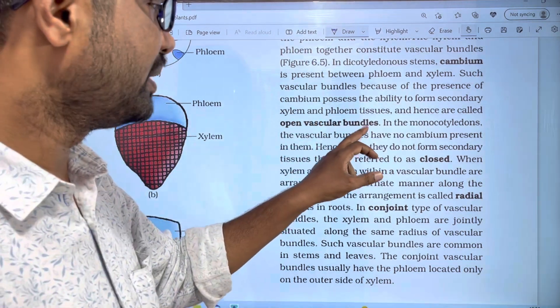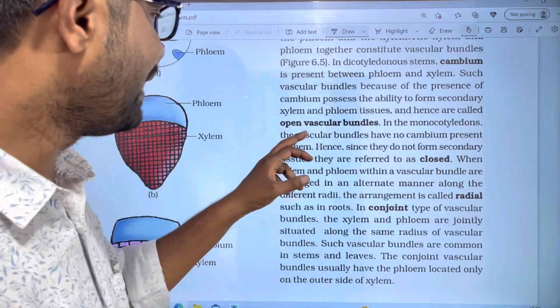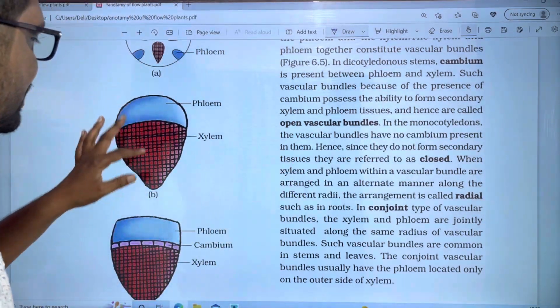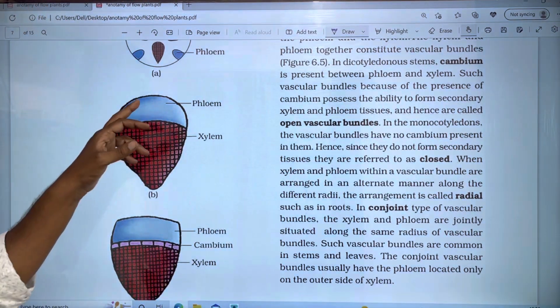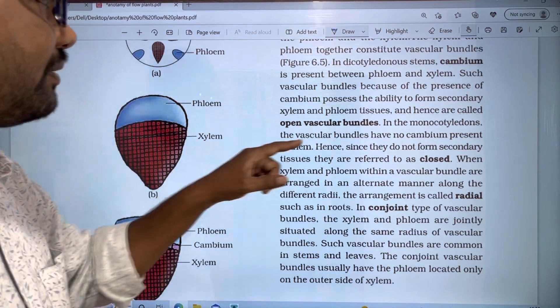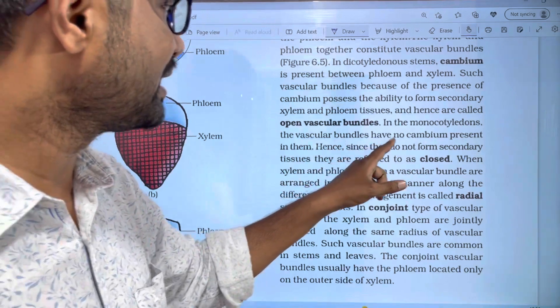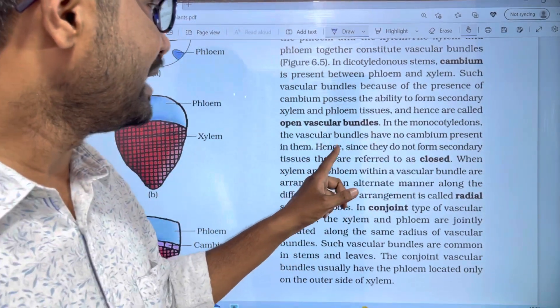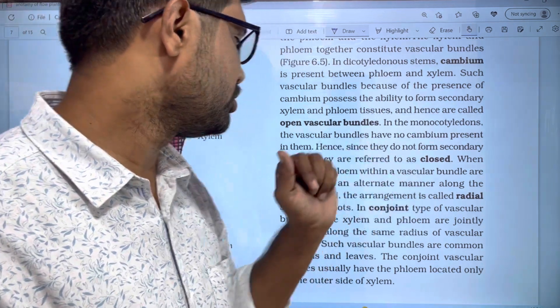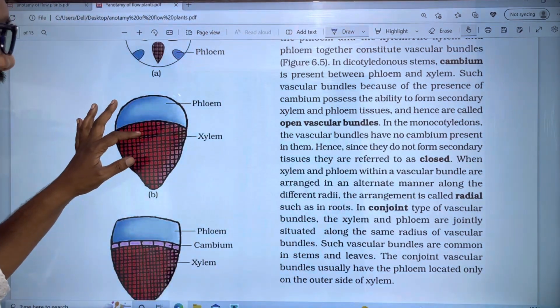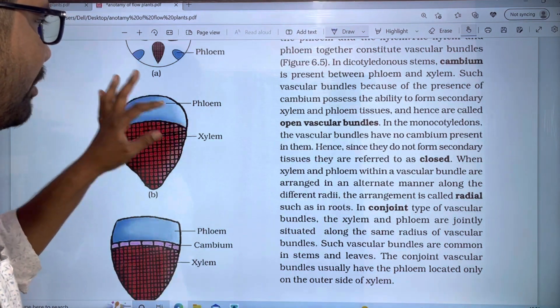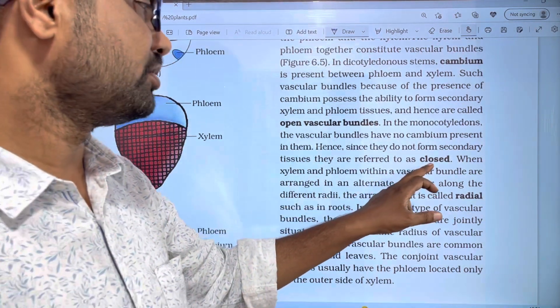In monocots, the vascular bundles have no cambium present in them, and since they do not form secondary tissues, they are referred to as closed.